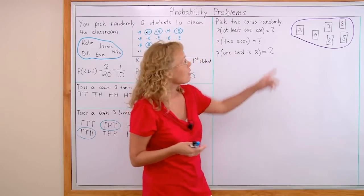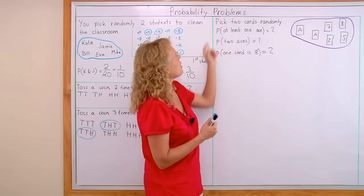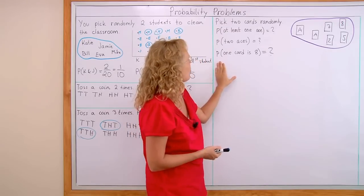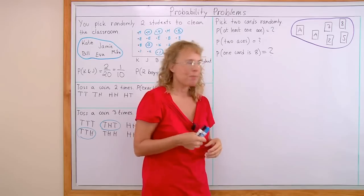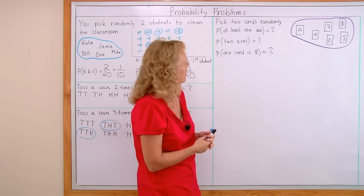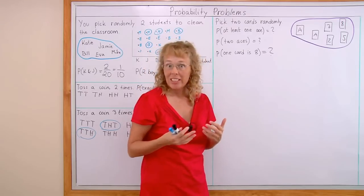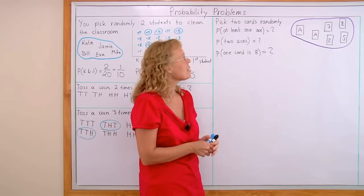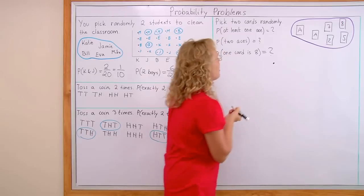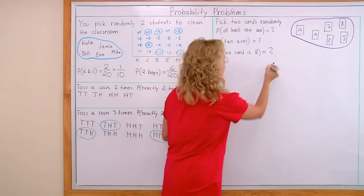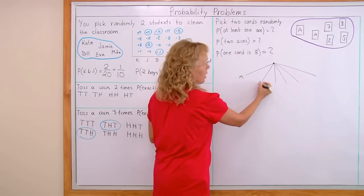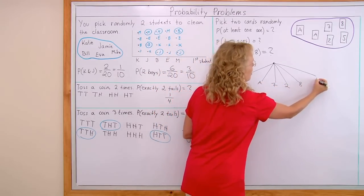Next: pick 2 cards randomly from this set of cards. What's the probability that at least one of the cards is an ace? What's the probability of picking exactly 2 aces? Or the probability that one card is 8? We're going to solve all of these by using a tree diagram. For my first card I have 6 choices — ace, the other ace, 7, 2, 8, or 5.